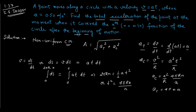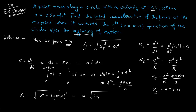Substituting the tangential and centripetal accelerations into the total acceleration formula: a total equals the square root of a squared plus (4πna) squared, which equals a times the square root of 1 plus 4πn. Substituting the value of a and solving, we get 0.78 meters per second squared.